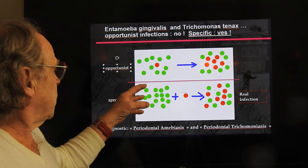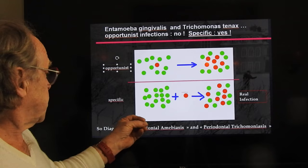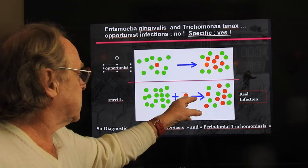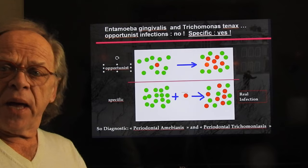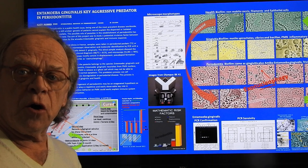When I speak about parasites, you have to understand these are not opportunistic parasites. You don't find those parasites in healthy patients — no parasites, only in periodontal disease. It's 100% specific — a real infection. You get those parasites from the environment: kissing, water, pets, and so on. You get infected and lose your bone.